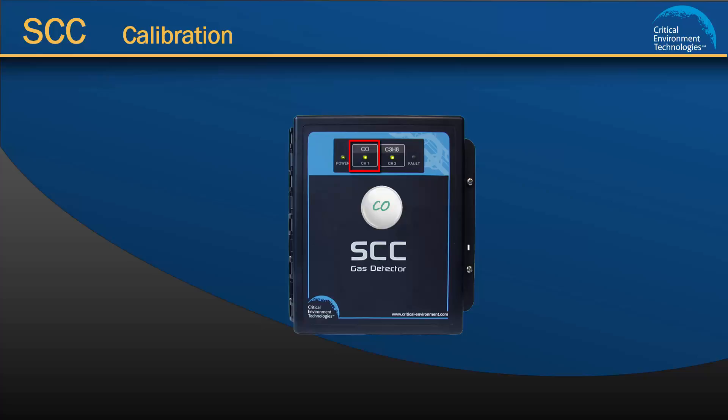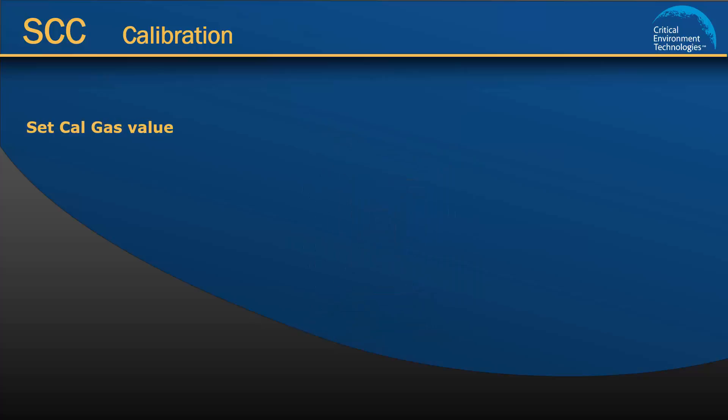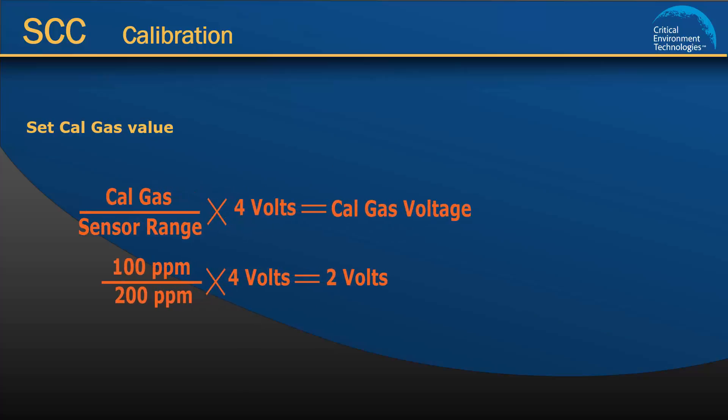There are three steps to follow when calibrating the SCC. The first step is to set the cal gas value. To calculate the value that needs to be set, you must use the formula shown on the screen. The values we know are: the factory set cal gas default for CO is 100 ppm, and the CO sensor range is 200 ppm. Using the formula, we are able to calculate that the cal gas value for CO is 2 volts.